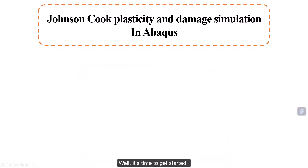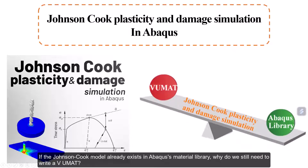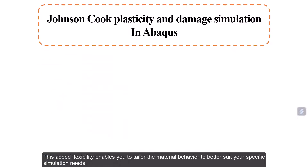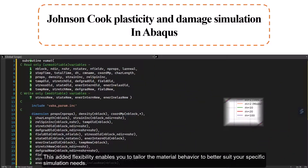It's time to get started. But before that, let me answer a question you probably have in mind. If the Johnson-Cook model already exists in Abaqus' material library, why do we still need to write a VUMAT? The answer is, while the built-in model restricts you to its predefined formulation, the VUMAT subroutine allows you to implement customized or modified versions of the Johnson-Cook model. This added flexibility enables you to tailor the material behavior to better suit your specific simulation needs.